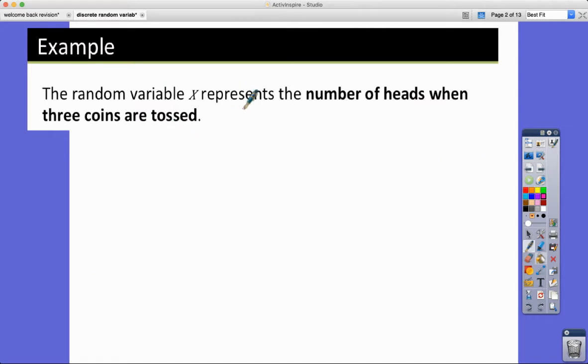Now then, let's have a look at this random variable x, which represents the number of heads when three coins are tossed. So you can imagine this happening. There's your three coins. And we can get various different outcomes that come up. We might get three heads.